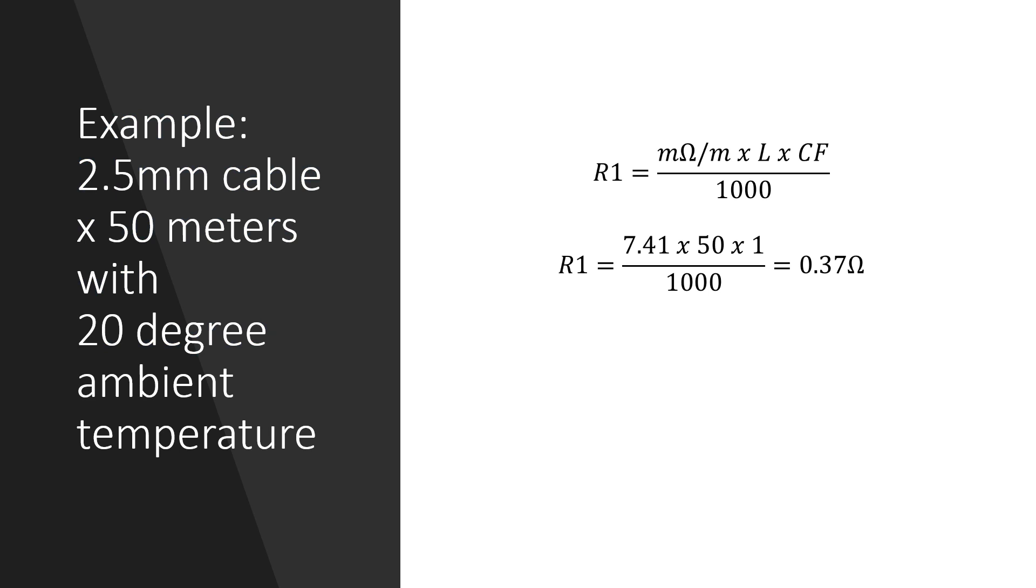So for example if we know that we have used 50 meters of 2.5 millimeter cable we can take the value of 7.41 milliohms per meter multiplied by 50 and then divide by 1000 which will give us 0.37 ohms. As I mentioned previously the correction factor for 20 degrees is 1 because the values are based on 20 degrees.